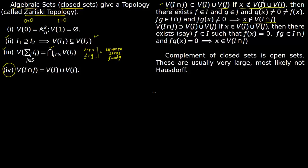If X does not lie in V(I) ∪ V(J), then there exists F in ideal I and G in ideal J such that F(X) ≠ 0 and G(X) ≠ 0. Now F·G lies in I ∩ J, and F·G evaluated at X is not equal to zero because F(X) ≠ 0 and G(X) ≠ 0. So X does not lie in the vanishing set of I ∩ J.